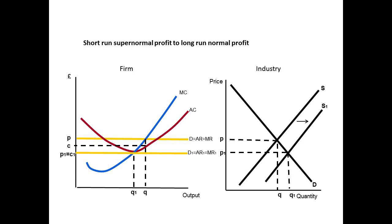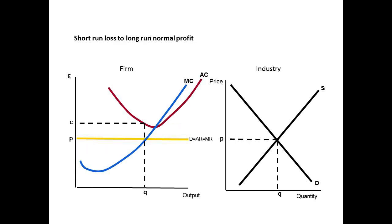We can show the same thing starting with a short-run loss. This time the firm is making a loss from cost C to price P for quantity Q, and because we've assumed there's no barriers to exit, some of the firms are going to leave the market because they're losing money.